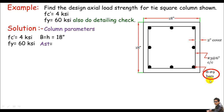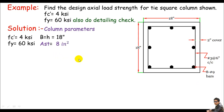For AST, we have 8 bars of #9. The area of a #9 bar is calculated using the circle area formula π·r², which gives approximately 1.0 square inch per bar. With 8 bars, AST = 8 × 1.0 = 8 square inches.